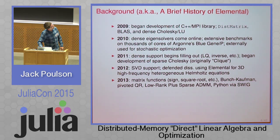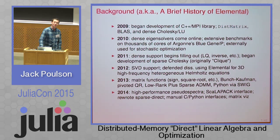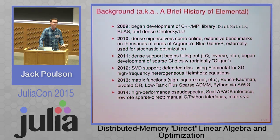Around that time I was filling out more sparse direct functionality and realized, why not just go ahead and start working on interior point methods? There was a year in the middle where I moved to Georgia Tech and took a detour adding a lot of support for computing pseudo-spectra — there's interesting functionality in the library if you want to compute how sensitive the eigenvalues of a non-symmetric matrix are to perturbations, maybe with a 100,000 by 100,000 matrix and a few thousand cores.